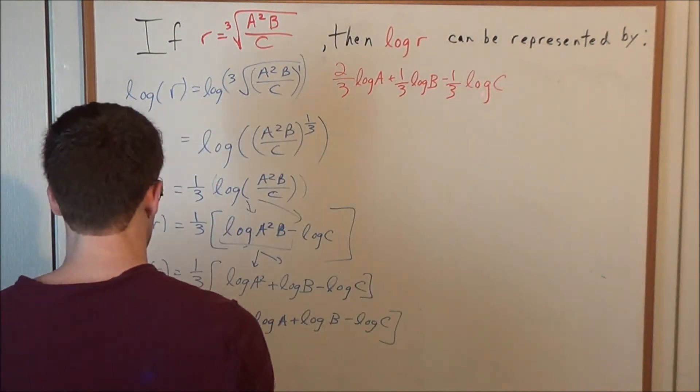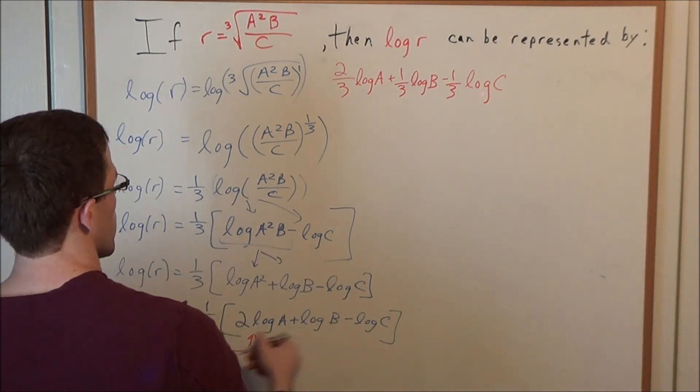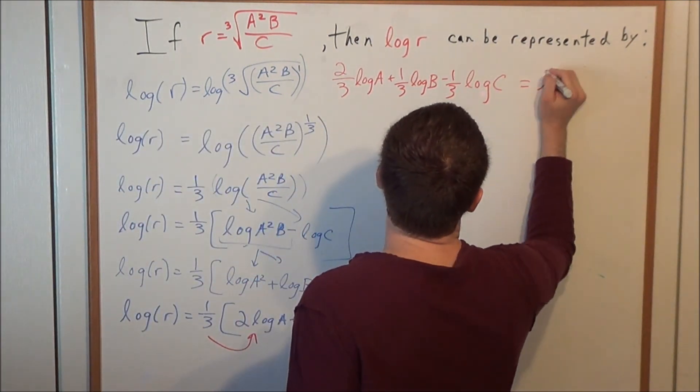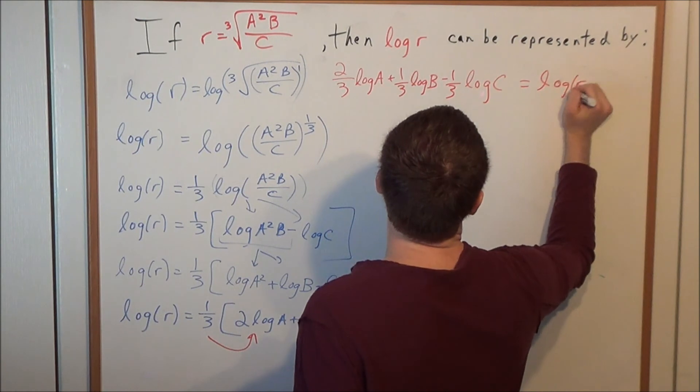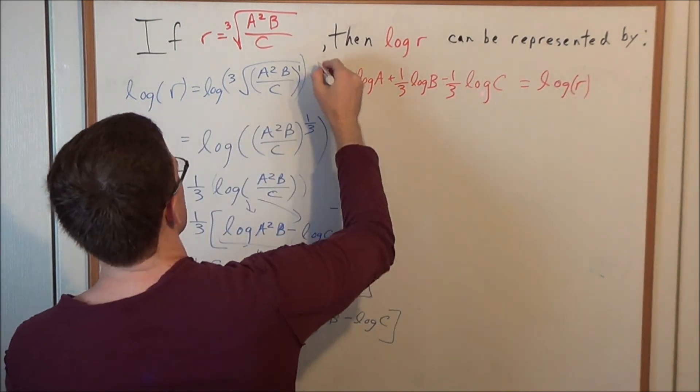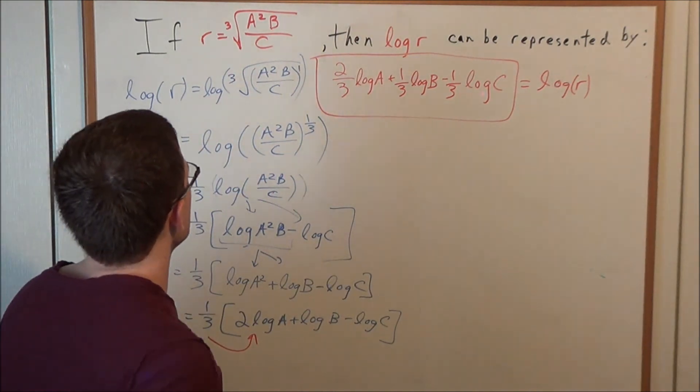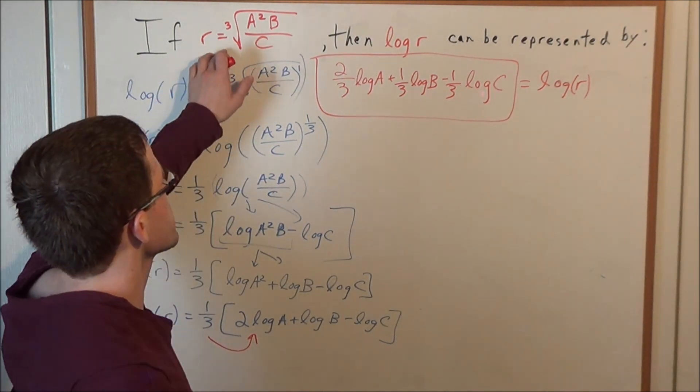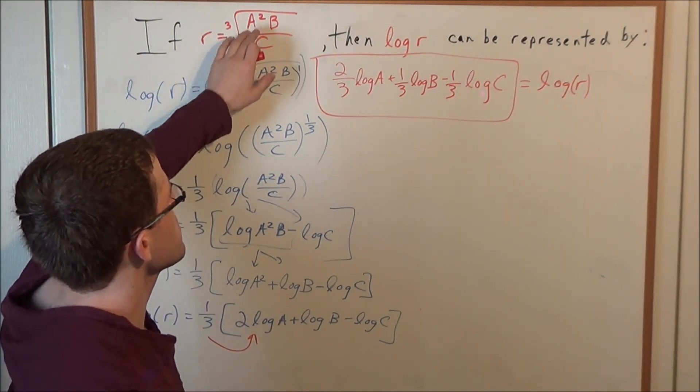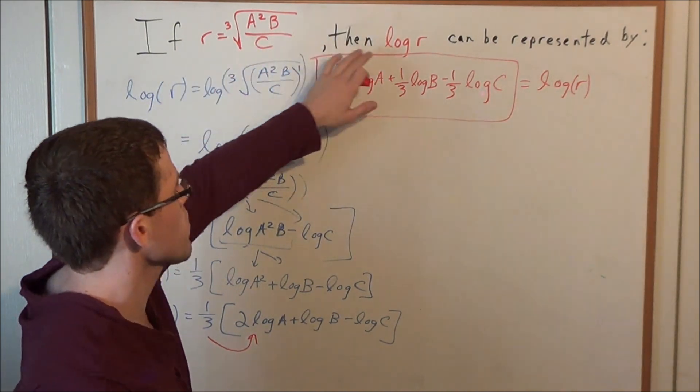And keep in mind this was all equal to log r. So this is equal to log r. And this expression here is going to be our final answer to the problem r equals the cube root of a squared b over c. If this is true, then what is log r?